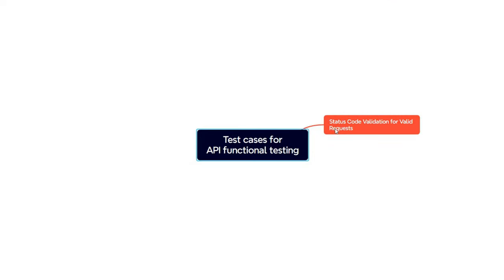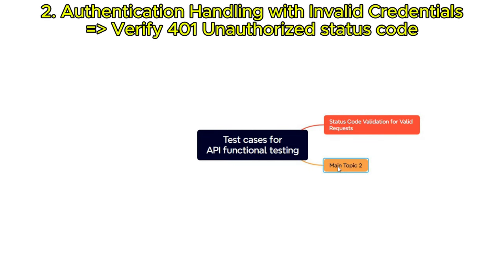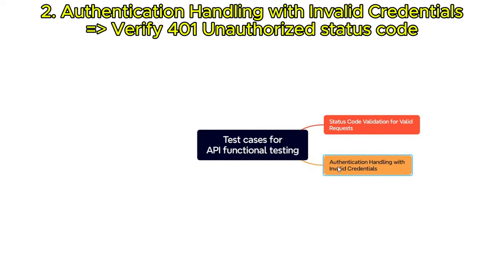The second test case is authentication handling with invalid credentials. Test the API's response when provided with invalid authentication credentials, ensuring it consistently returns a 401 Unauthorized status code as expected.